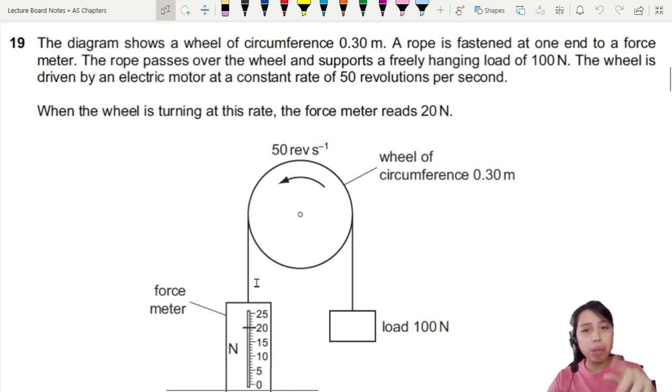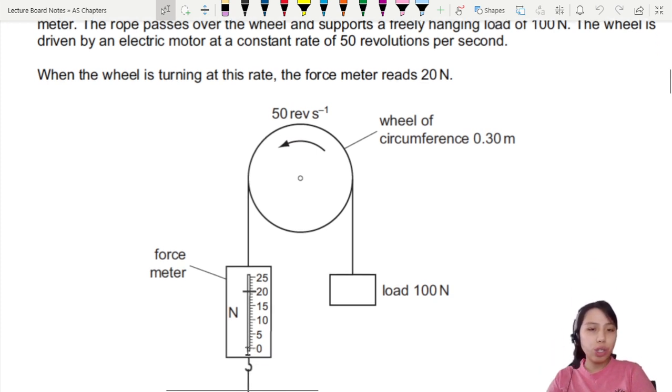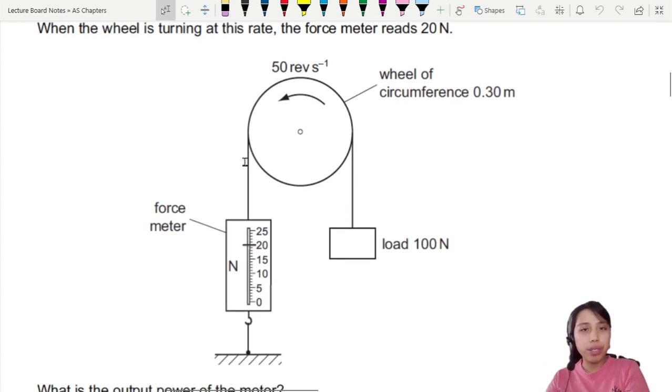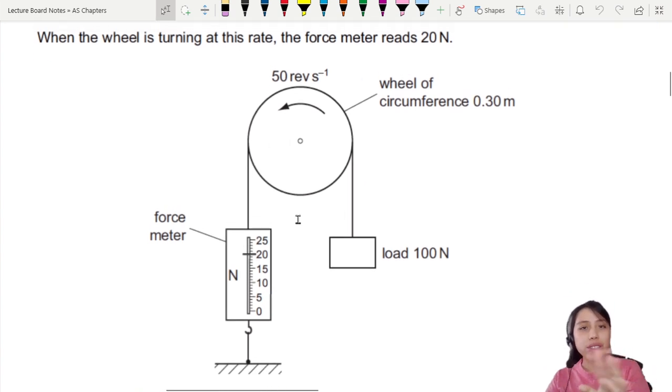The wheel is driven by an electric motor at a constant rate of 50 revolutions per second. When the wheel is turning at this rate, the force meter will have some reading. This is not a frictionless pulley system because the motor is turning to help pull up the load.